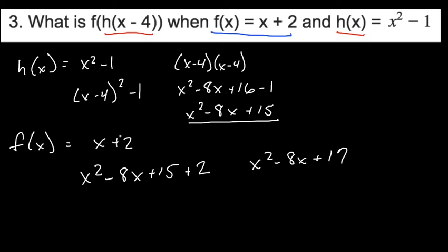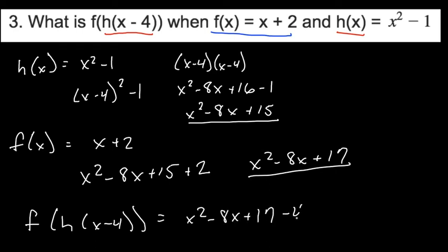Now finally, we need to plug this expression back into our original output. So we want to find f of h of x minus 4. We simply put in our last expression into this. So we're going to be left with x squared minus 8x plus 17 minus 4.